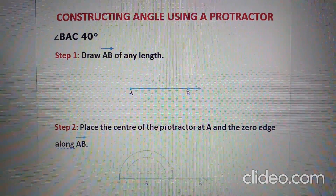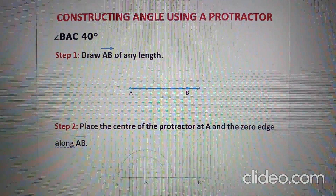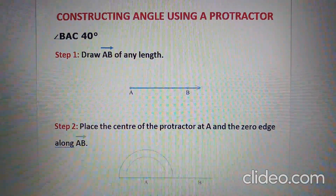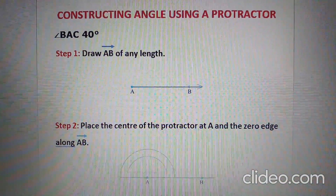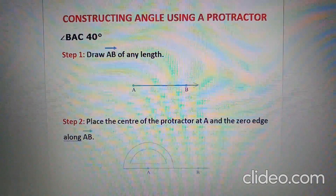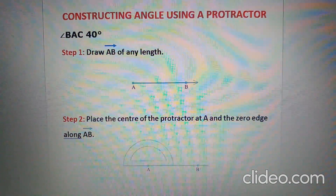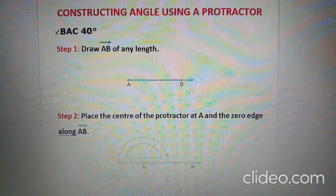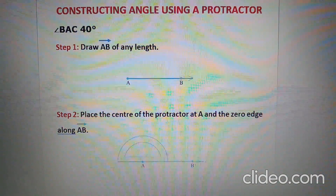Hello children, today we are going to learn how to construct an angle using a protractor. Suppose we have to construct angle BAC equal to 40 degrees. For that we have to follow some steps.